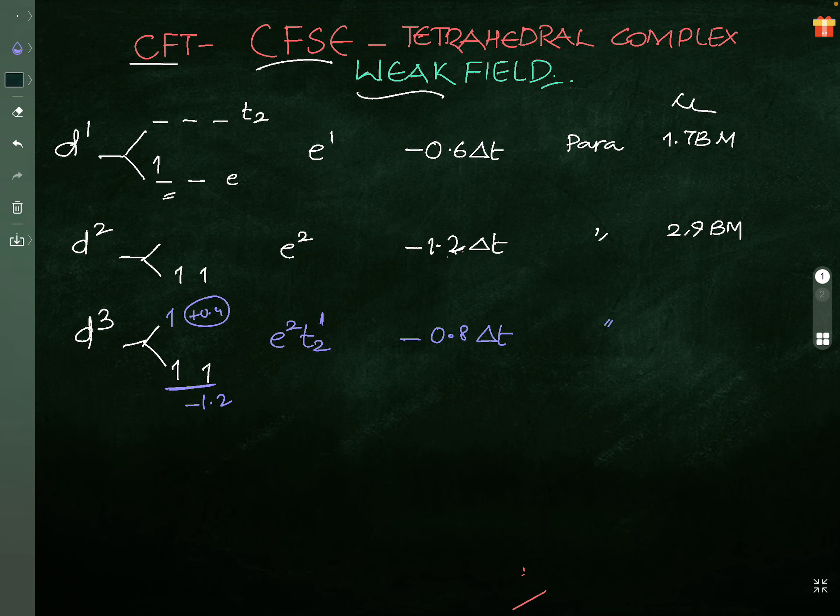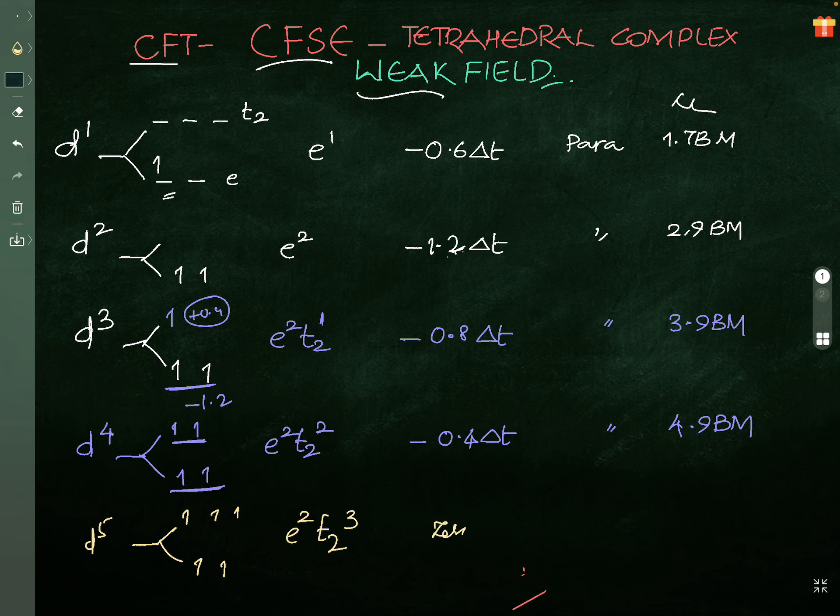d4 configuration: one, two, one, two - e2 t2^2, minus 0.4 delta t. Because of this it is 1.2, because of this it is 0.8, paramagnetic 4.9 Bohr magnetons. No pairing is taking place, you notice that. d5 configuration: one, two, three, four, five - e2 t2^3, zero, paramagnetic maximum paramagnetic.